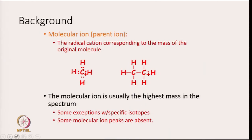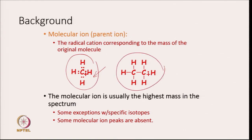There are certain terms we should be familiar with when dealing with mass spectrometry. One is the molecular ion or parent ion peak, which corresponds to the radical cation having the mass of the original molecule. For example, if methane is bombarded with electrons, one electron is removed and what remains is your molecular ion. Similarly, in the case of ethane, that radical cation is your molecular ion. The molecular ion is usually the highest mass in the spectrum, with exceptions when isotopes of higher molecular weight are present, and in some cases molecular ion peaks are absent.